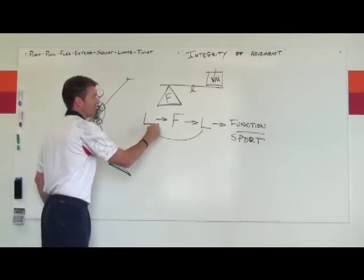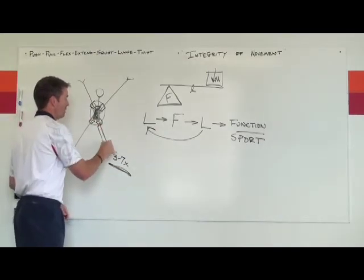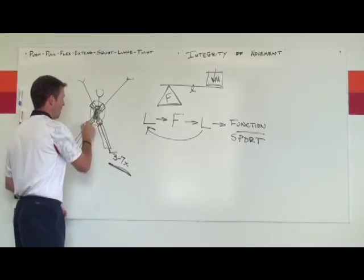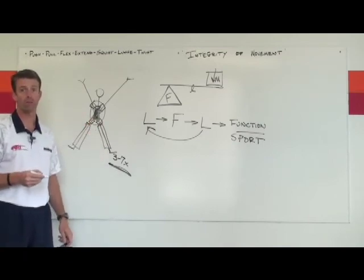This imbalance overpowers the fulcrum, so now the lever arms are overpowering the fulcrum, and the fulcrum is failing. In the human body, that translates to pain and or injury.